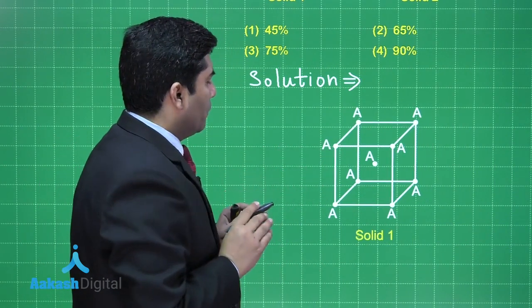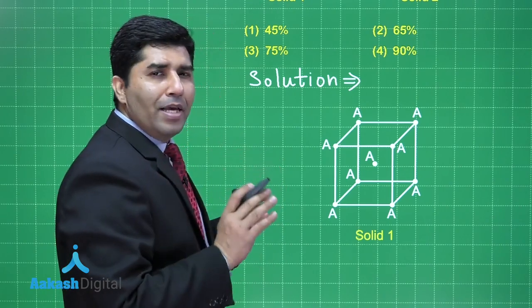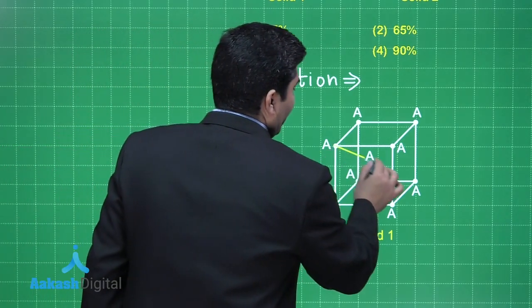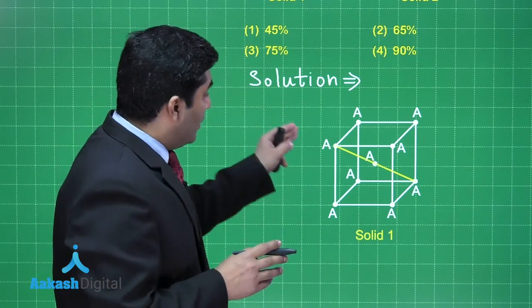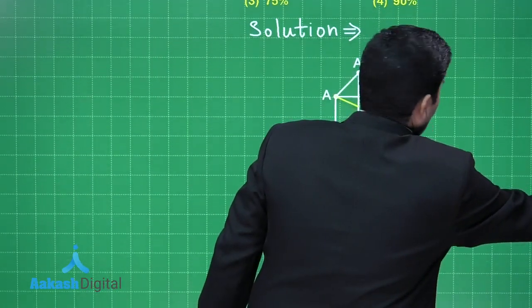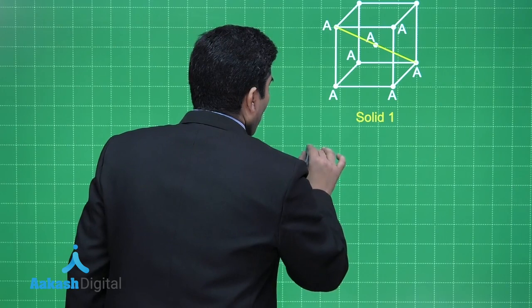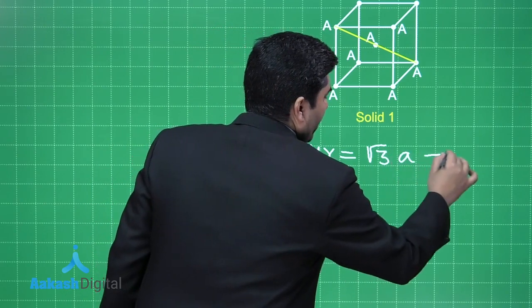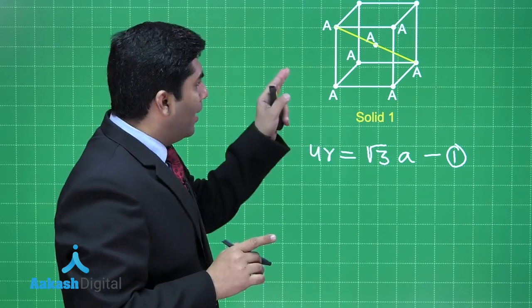In solid 1, a normal BCC structure, all atoms A have the same radius R. The body diagonal has length root 3 times A, where A is the edge length. Along the body diagonal we have atoms touching, giving the relation 4R equals root 3 times A. This is our first equation relating the atomic radius to the edge length.